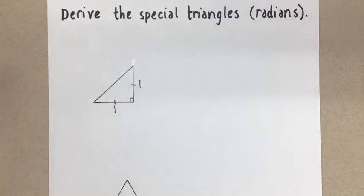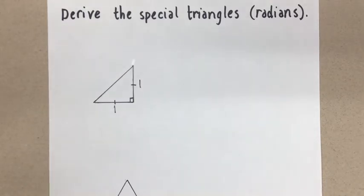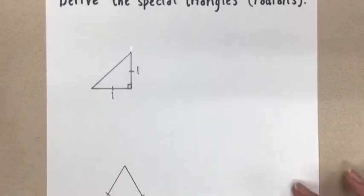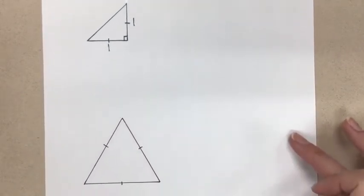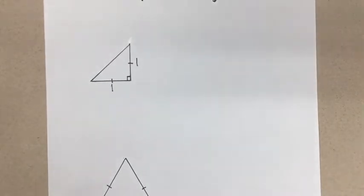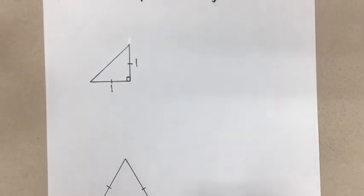Hi everyone, Mrs. A here. Today I'm going to show you how we come up with these special right angle triangles that we use to get exact values with our primary trig ratios. We're going to do this today in radians. The reason why these triangles are important is because they give us these special angle values of pi over 4, pi over 3, and pi over 6, and that allows us to get exact values without using a calculator.